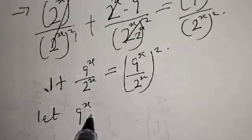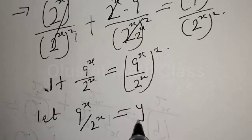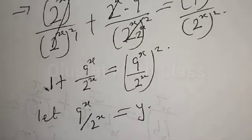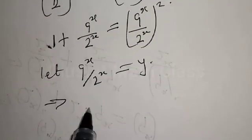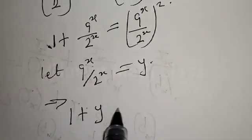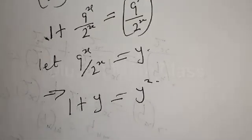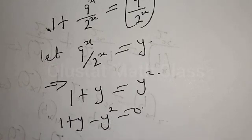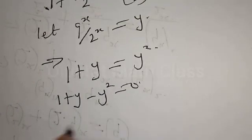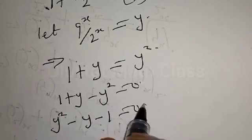Let y equal to 9 raised to power x over 2 raised to power x. This implies that we have 1 plus y equal to y squared, which can be rewritten as y squared minus y minus 1 is equal to 0.